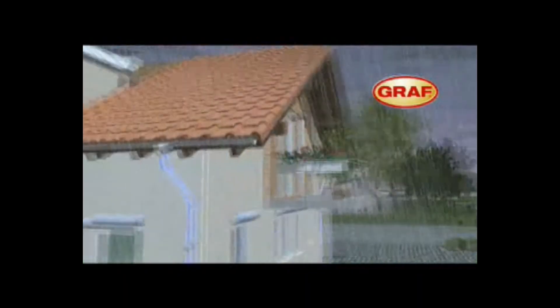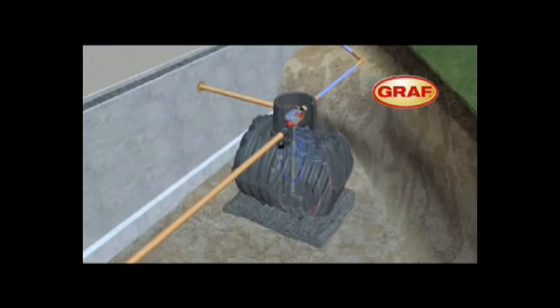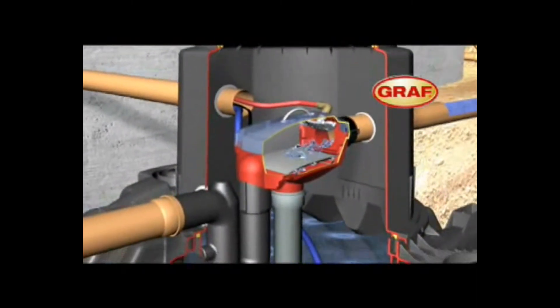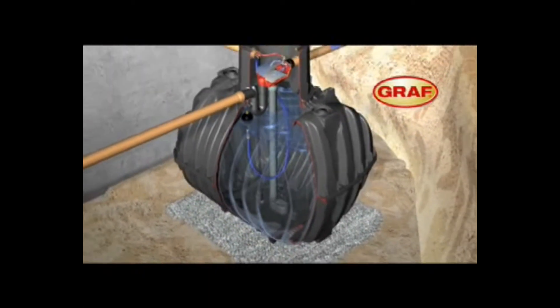The captured rainwater is directed to the Karat underground tank by the downpipes. Here it is filtered by the integrated OptiMax Pro filter before it flows into the Karat underground tank via the stilling well.